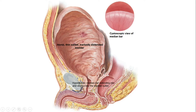Here, because of BPH, the median bar has extended into the bladder and obstructed the bladder outlet. This leads to urinary retention and results in an atonic, thin-walled, markedly distended bladder. Because of the median lobe hypertrophy, in the cystoscopic view the bladder wall will be obstructed by the median bar.